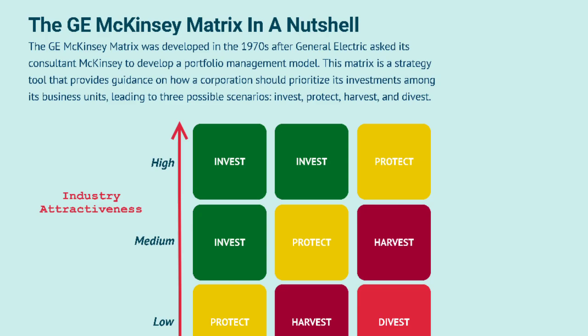We are going to look at another model in portfolio analysis, and that is the General Electric model, which deals with competitive strength and market attractiveness. The GE model was developed by McKinsey, also known as the McKinsey Matrix. It was developed in the 1970s after General Electric asked its consultant, McKinsey, to develop a portfolio management model. This matrix is a strategy tool that provides guidance on how a corporation should prioritize its investment among its business units.